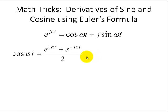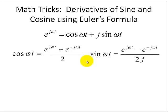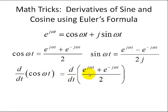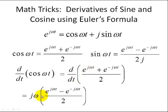In earlier videos, I showed you that cosine omega t is represented as a sum of complex exponentials and sine omega t is represented as a complex exponential as well. So now we're going to take the derivative of cosine omega t. Substituting this relationship into this derivative, the derivative of the exponential is just j omega times the same exponential. Factoring out j omega, since it appears in both exponentials, we have this relationship.